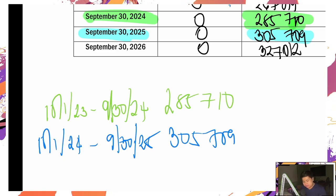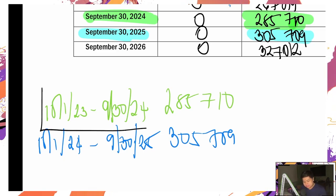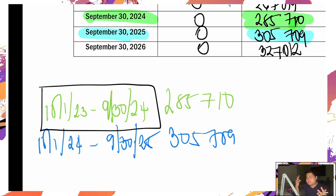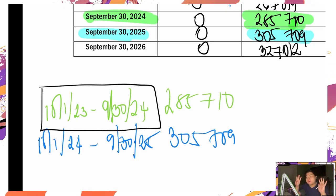Ilang buwan dito ang sakop ng 2024? Sa yung October 2023 hanggang September 30, 2024 — January, February, March, April, May, June, July, August, September — siyam na buwan. So nakanayin over 12.